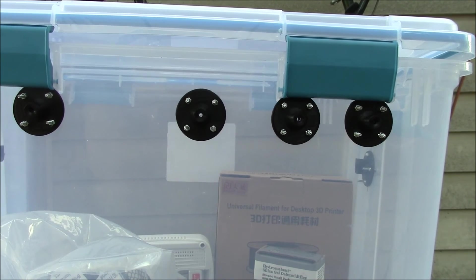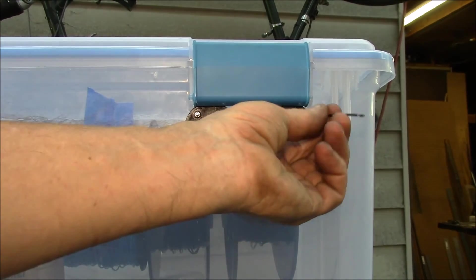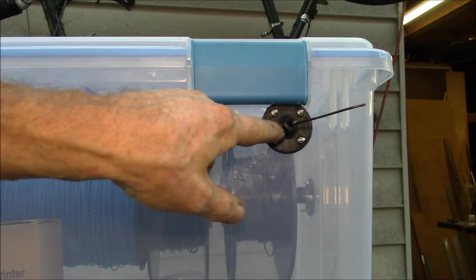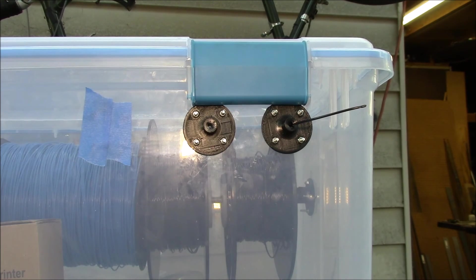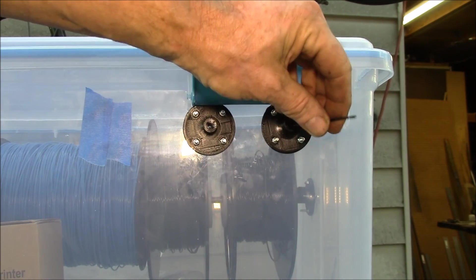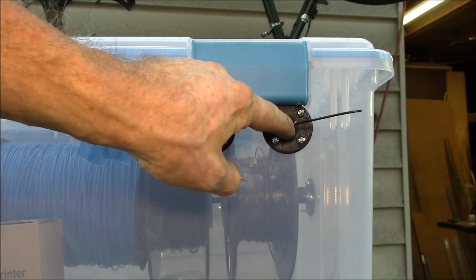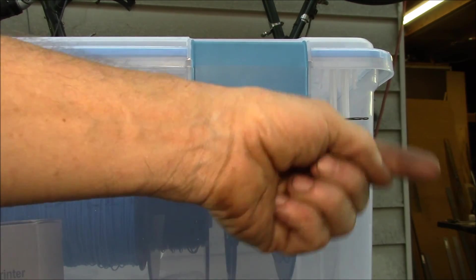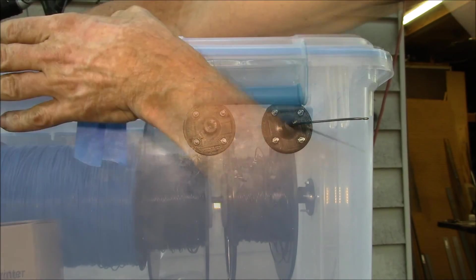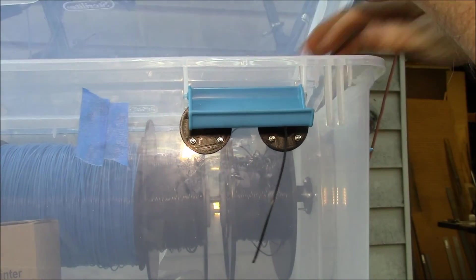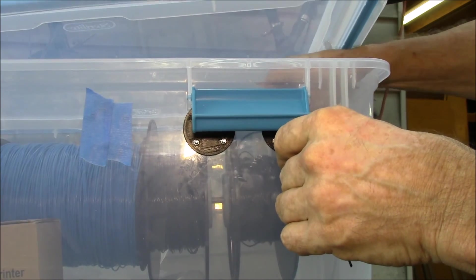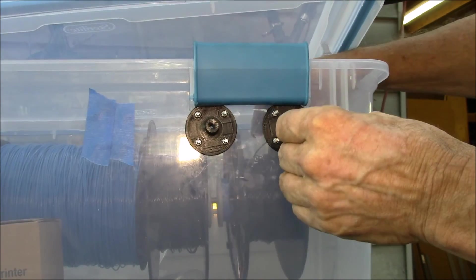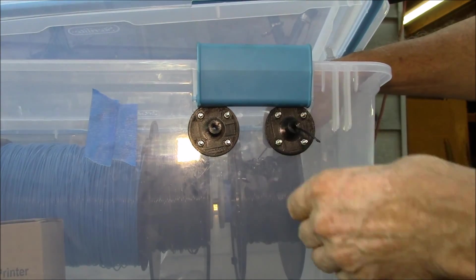Okay, there we go. Got the filament pass-through here. I'll just plug my filament guide tube material - four by two millimeter Teflon tube. So I can just leave each filament just sticking out a little bit here, and then you'll use this to feed into the extruder.